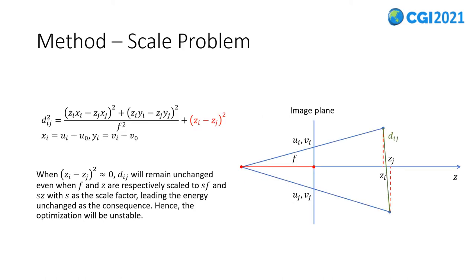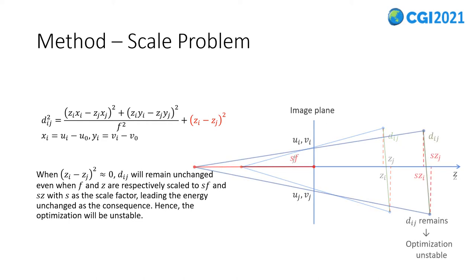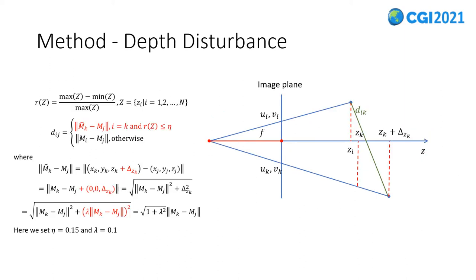In our experiments, we encounter a scale problem when the depth of all marked points is very close to each other. With the model simplified, the definition of distance between 3D points is actually changed to the equation above. In this case, when the difference between zi and zj is close to zero, the distance will remain unchanged when f and z correspondingly scale. Hence, the optimizer will be unstable because it cannot find a constant scale to match the distance.